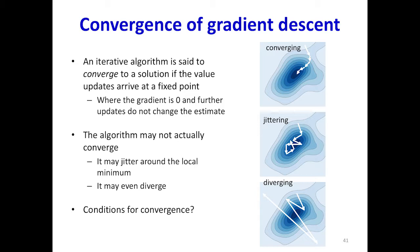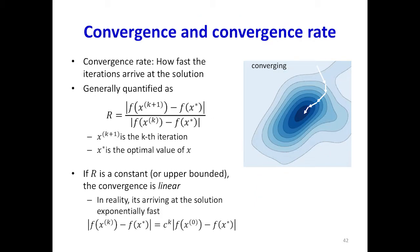For gradient descent, we say it converges if you arrive at a fixed point — where the gradient is zero, or you get closer and closer to that point. What could happen instead is you don't converge: you're bouncing around, jittering, or you even diverge. There are conditions to respect to avoid that. You can also define the convergence rate, which quantifies how fast you get to your solution — the relative rate of distance to the target at step k versus step k-1. If this rate r is bounded by a constant, the convergence is called linear, but don't be fooled: the speed of arrival is actually exponential.